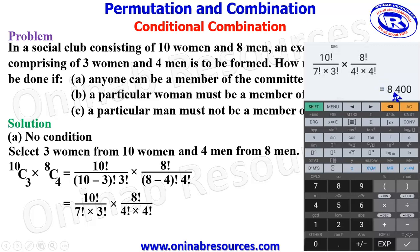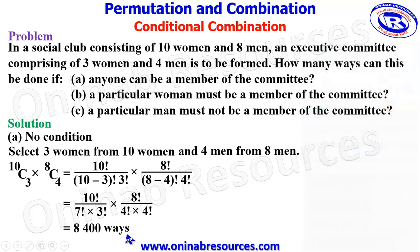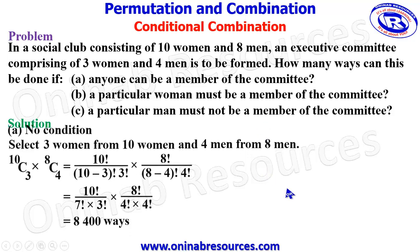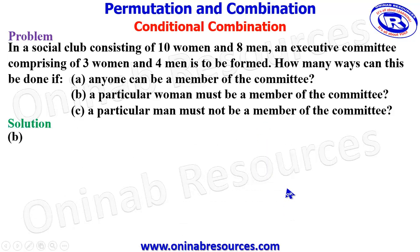We have 8,400 ways of selecting 3 women from 10 women and selecting 4 men from 8 men without any condition. That means everyone is eligible to be a member of the committee. Then we go to problem B.